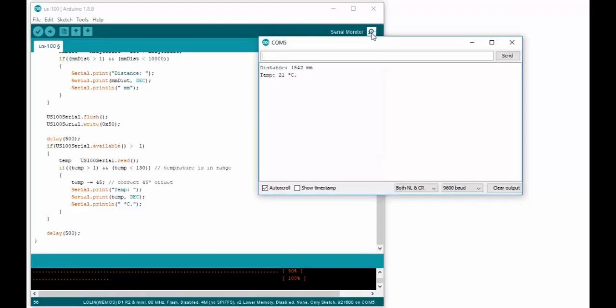In this video, I'll first show you how to use the US100 via the ordinary trigger and echo method, and in the last part, I'll show you how to use the serial communication so that the sensor sends you distance and temperature automatically. According to me, this is definitely the best method.